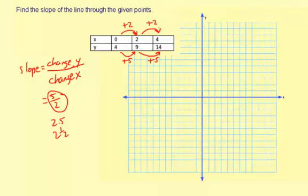I want to show you some other ways to look at slope. Let me plot these points. The first coordinate is 0, 4 - so 0 for x and up 4 for y. The next one is 2 and up 9: 3, 6, 9, right there.